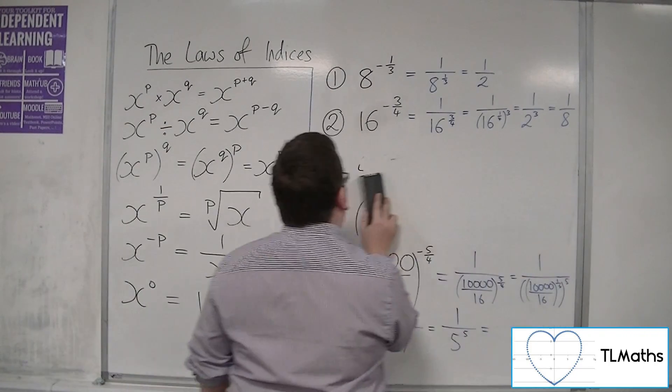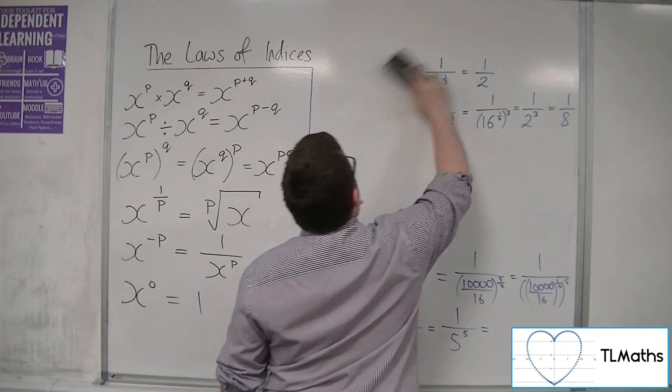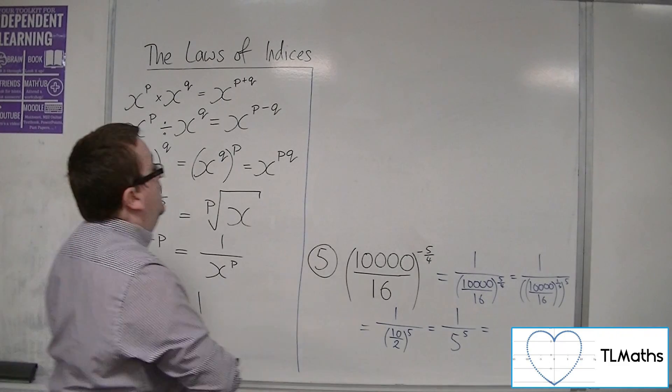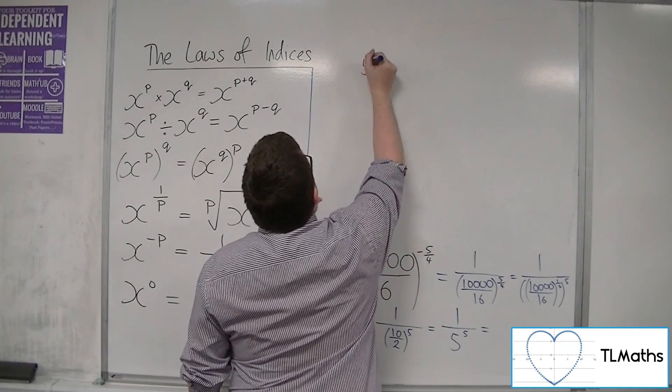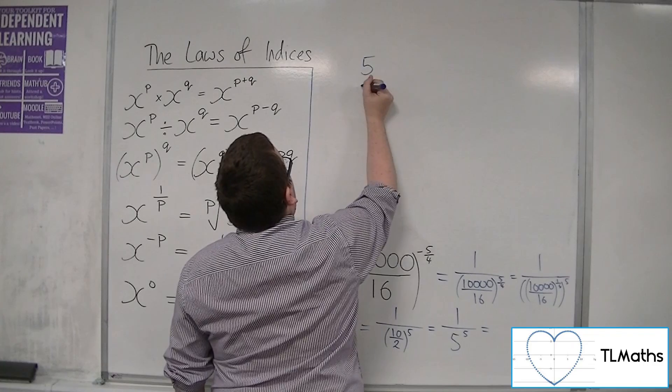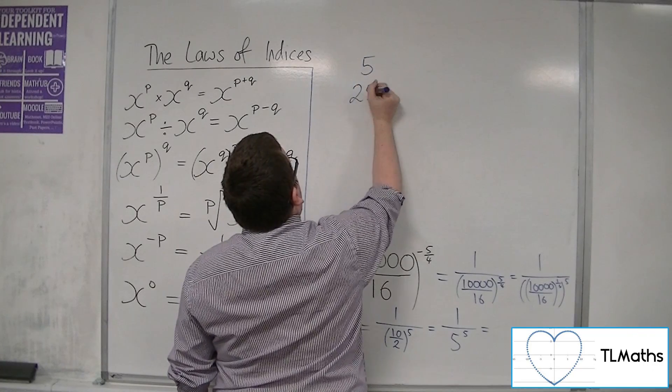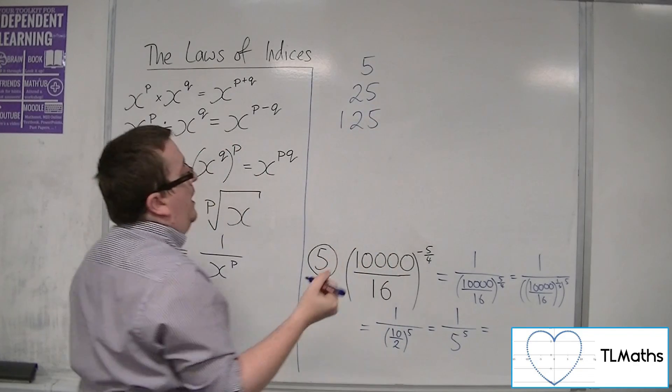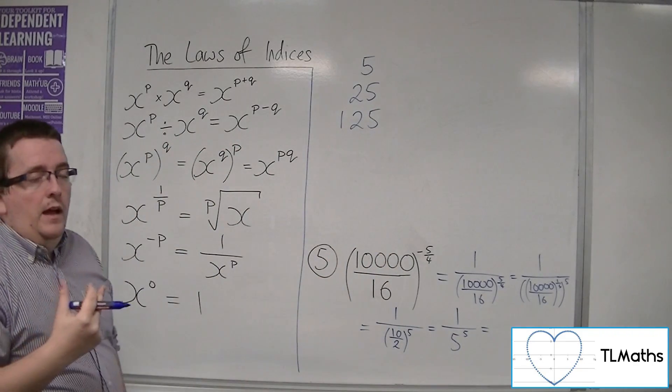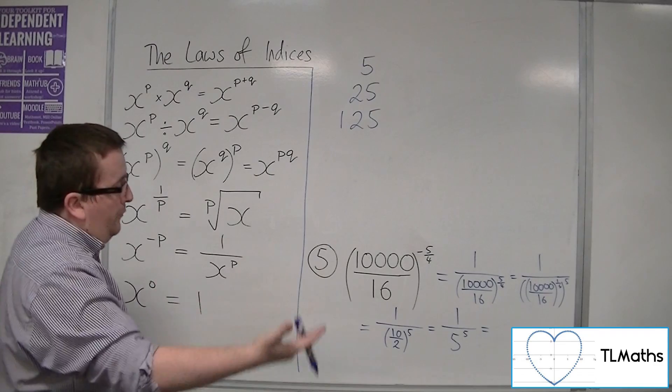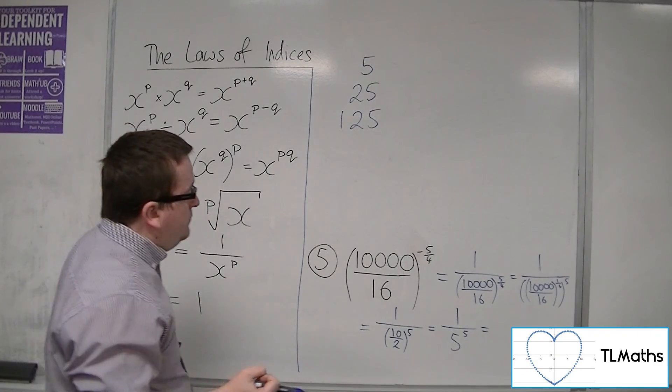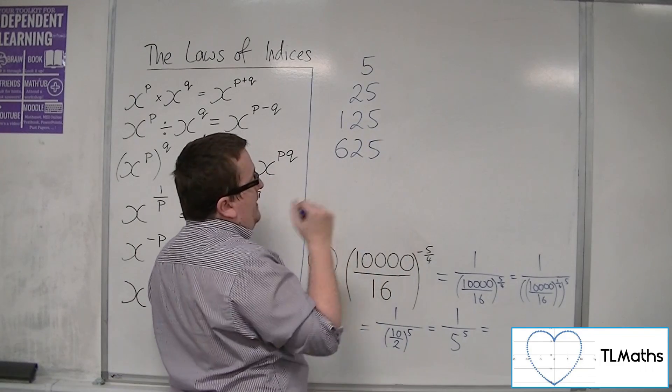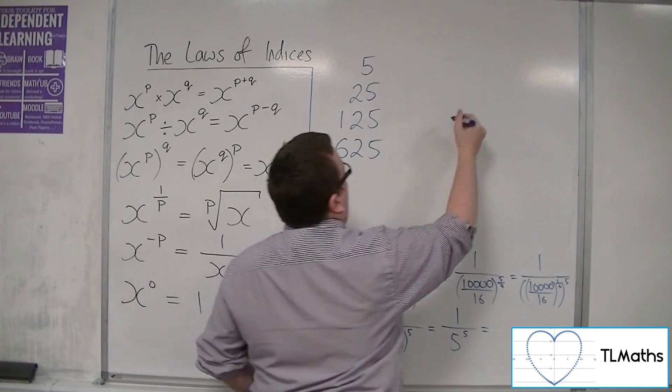So 5 to the power of 5. Let's give ourselves some space. Well, 5 to the power of 1 is just 5. 5 to the power of 2 is 25. 5 to the power of 3 is 125. Now 125 times 5 is 625. And then we've got to do 625 times 5.